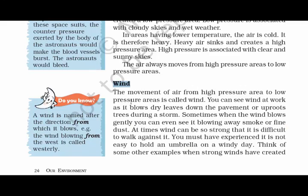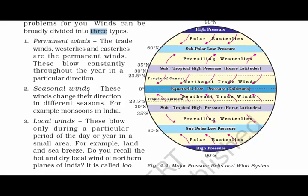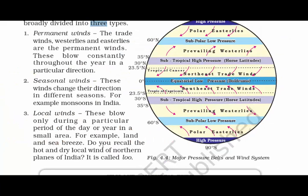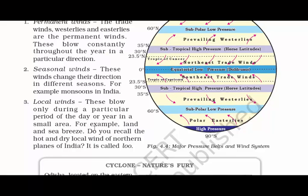Now let's talk about winds. Winds are the movement of air from high pressure areas to low pressure areas. Winds are broadly divided into three types: permanent winds, seasonal winds, and local winds. Permanent winds, also called trade winds, blow constantly throughout the year in a particular direction — as you can see on this world map, the colorful arrows indicate trade winds constantly moving around the continents. Seasonal winds change their direction in different seasons — for example, monsoons in India, where Kerala is the first state to witness the monsoon. Local winds blow only during a particular period of the day or year in a small area — for example, land and sea breeze.